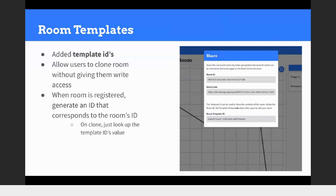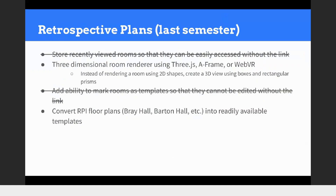We also worked on room templates. We added template identifiers that are generated when you create a room, allowing users to clone rooms without giving them write access. Previously with just a room ID, someone could go in and make changes, which would be bad. With the template ID, you can clone and all that data gets copied over to the new room as read-only. Looking at our retrospective goals: we got recently viewed rooms, we added the ability to mark rooms as templates so they can't be edited, but we could not do the RPI room plans yet — that's coming next.